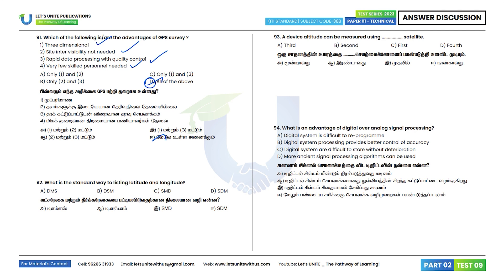Question 92: What is the standard way of listing latitude and longitude? Latitude and longitude are listed in DMS — Degrees, Minutes, Seconds. Option D is the correct answer.